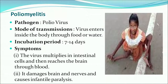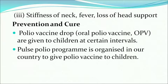Another dreadful disease we Indians face is poliomyelitis, commonly known as polio. Its pathogen is poliovirus, and the incubation period varies from 7 to 14 days. The virus multiplies in intestinal cells, then reaches the brain through blood, damages the brain and nerves and causes infantile paralysis. Oral polio vaccine drops should be given to children at regular intervals. The Pulse Polio program is organized in our country for this purpose.